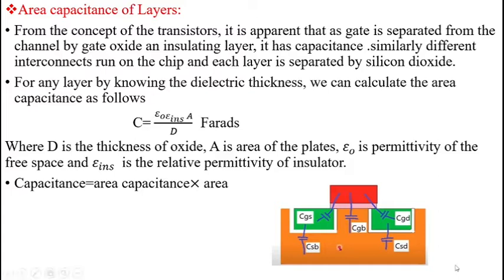In this figure, the gate and the n-diffusion layer are separated by a dielectric material, therefore forming one capacitance. Similarly, the n-diffusion layer and the p-type substrate also form one capacitance. When two layers are separated by a silicon dioxide layer, there exists a capacitance between them.